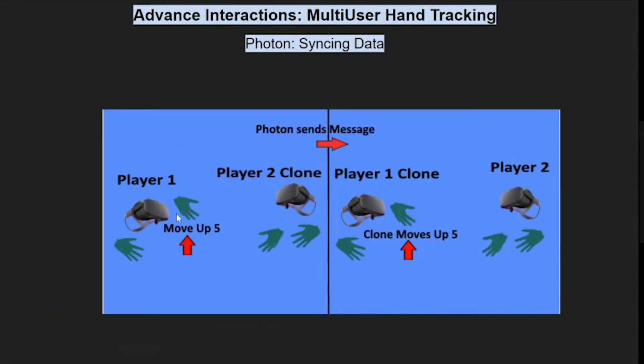When Player 1 does something like moving my hand up five centimeters, Photon is going to send a message to tell the clone of Player 1 to mimic that action. So the clone is actually going to move, and that's what the second player is going to see.